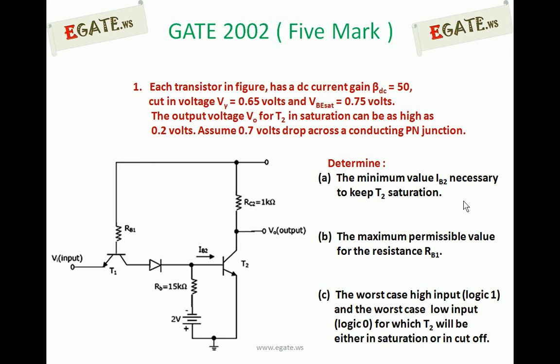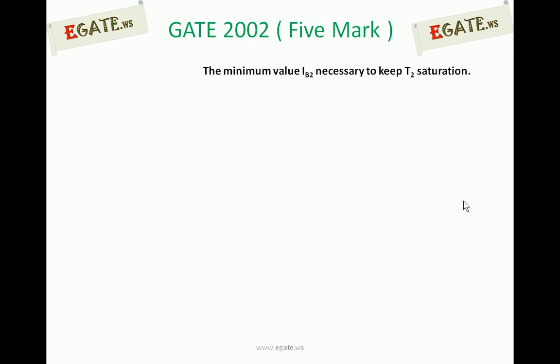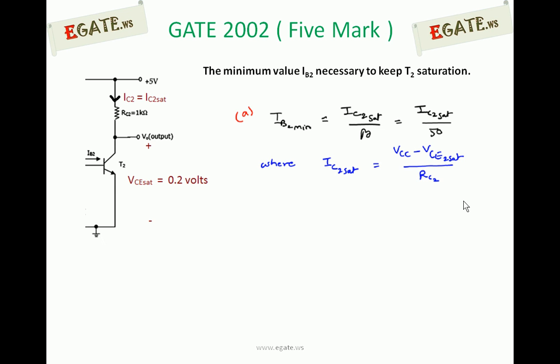First one: the minimum value IB2 necessary to keep T2 in saturation. If transistor T2 is in saturation, IB2 minimum can be written as IC2 saturation divided by beta. Beta value is given as 50, so IB2 minimum equals IC2 saturation divided by 50. IC2 saturation can be calculated from the circuit diagram where V0 is nothing but VCE for T2 — collector to emitter since emitter is grounded. Since transistor T2 is in saturation, V0 equals VCE saturation.